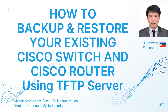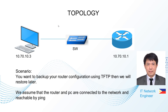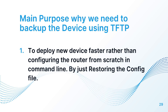Today I will show you how to back up the IOS of your existing Cisco switch or router using a TFTP server. This is the topology — the PC can reach the router and you are plugged on the same switch. The main purpose of why we need to back up devices to TFTP is because sometimes we need to replace a router or switch with a new one, so rather than doing the commands again one by one, you can just back up the config file and then restore it, making it easier to deploy the new device.